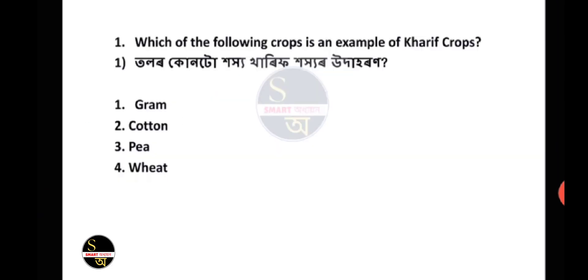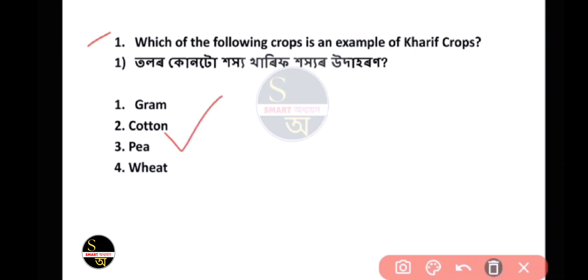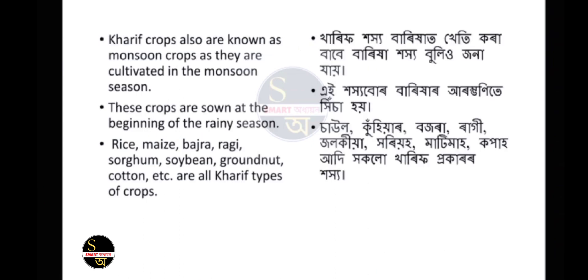First question: Which of the following crops is an example of Kharif crops? What is the answer? Kharif crops are also known as Monsoon crops as they are cultivated in the Monsoon season. These crops are sown at the beginning of the rainy season.